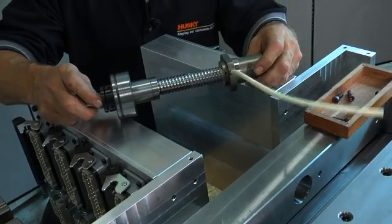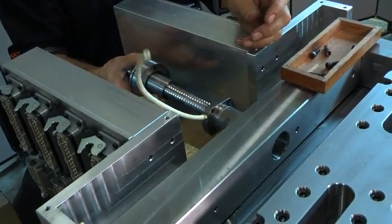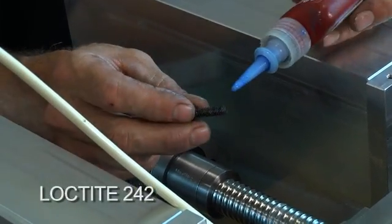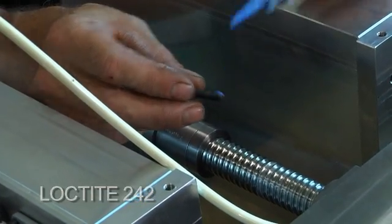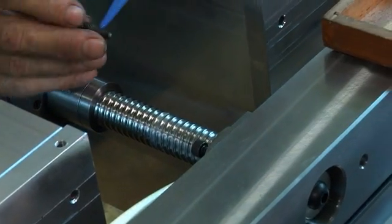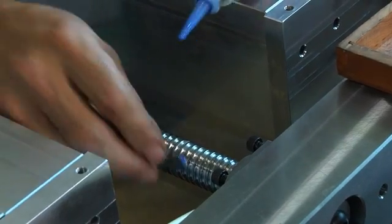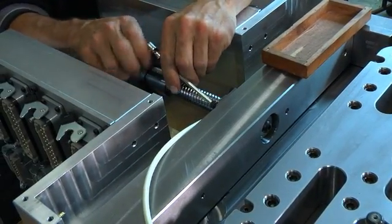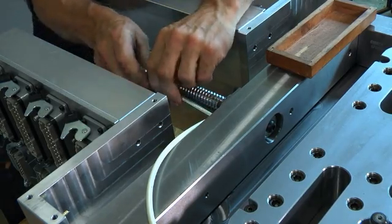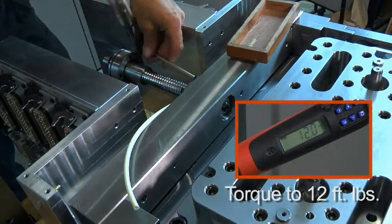This is the ball screw assembly. Now we're going to install this. This will come preassembled. Now we're going to install the socket head cap screws with Loctite 242. Now we're going to torque to 12 foot-pounds.